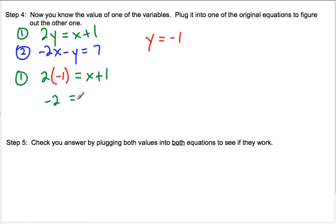And we can subtract 1 from both sides. And we get negative 3 equals x, or x equals negative 3. And then we want to put that answer in an x comma y form. So negative 3 comma negative 1.